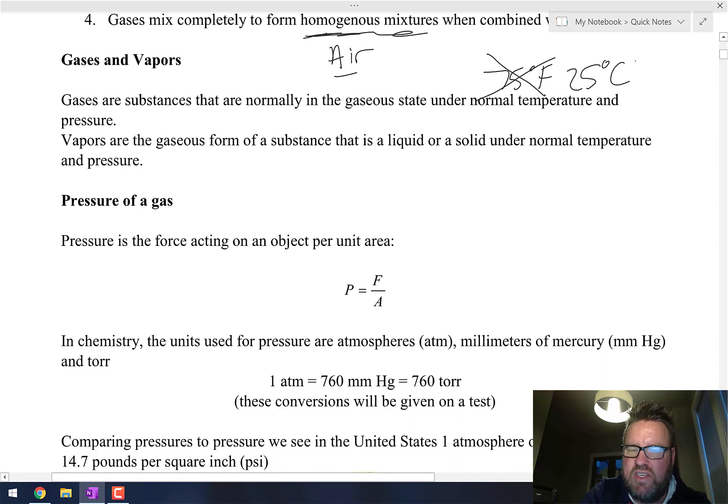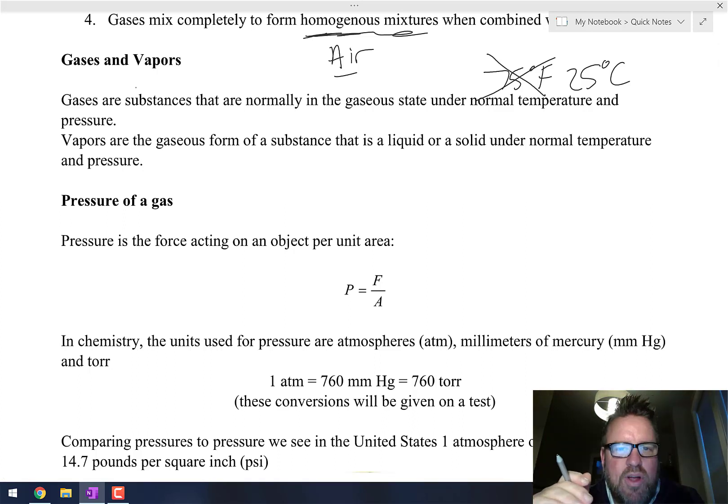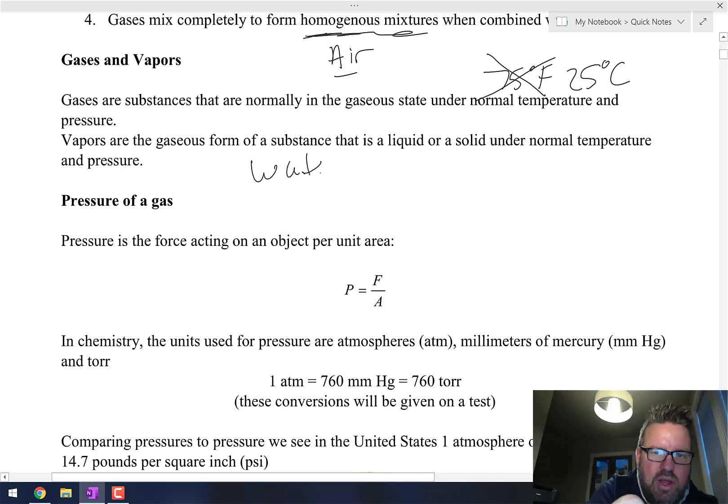When you're at a normal temperature, which is usually about 75 degrees Fahrenheit—we're not going to really use that in science—it's right about 25 degrees Celsius. And pressure is about normal atmospheric pressure, so the pressure you feel right now. Things that are gases are at normal temperature and pressure.